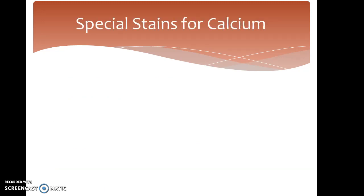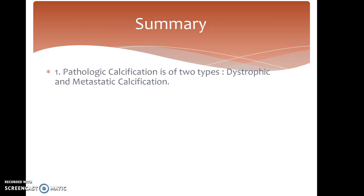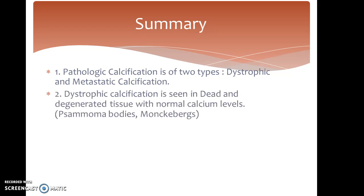The special stains for calcium are Alizarin red and Von Kossa. To summarize, pathological calcification is of two types: dystrophic and metastatic calcification.